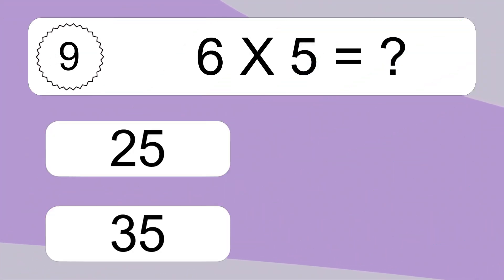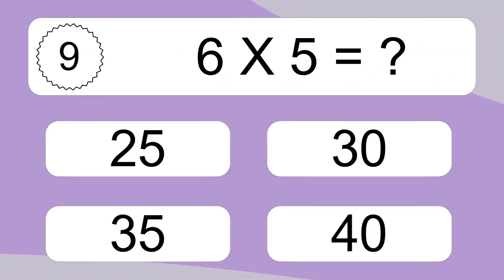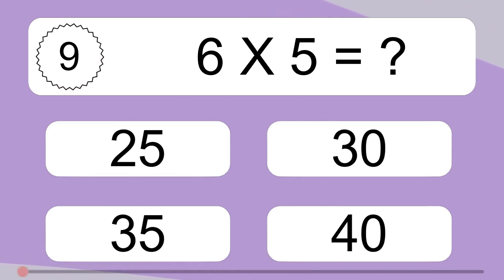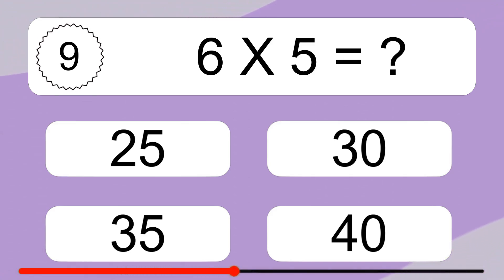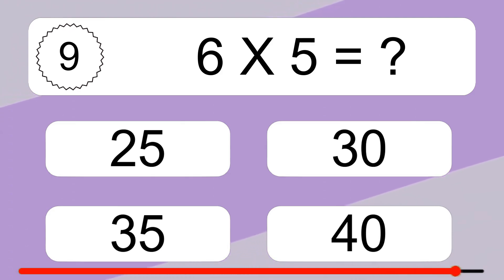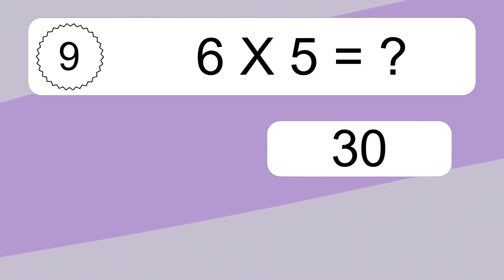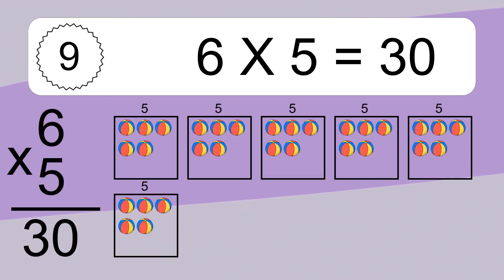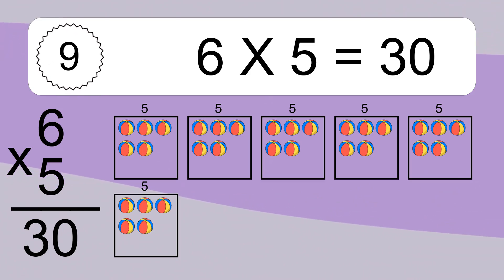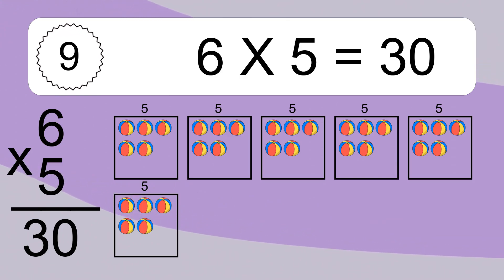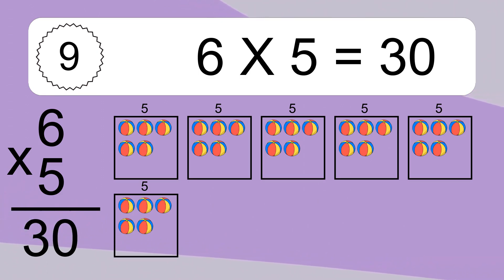6 times 5 equals what? 6 times 5 equals 30. We have 6 boxes, and each box has 5 colorful balls inside. If you count all the balls in all the boxes together, you will have 6 times 5 balls. This equals 30 balls.